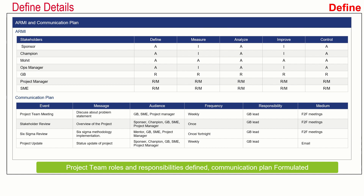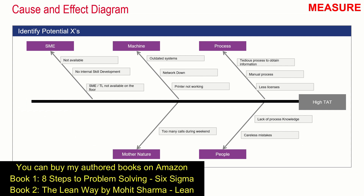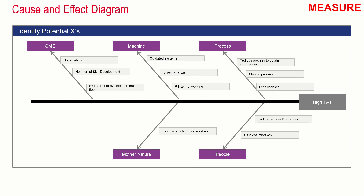The team then got into a room for a brainstorming session to create a fishbone diagram. The head of the fish represents the problem — the effect — which is high turnaround time. Causes identified include: under process — tedious process to obtain information, manual process, and fewer licenses on the floor. Under people — lack of process knowledge and careless mistakes. Under mother nature — too many calls during weekends. Under machine — outdated systems, network down, printer not working. Under SME — SMEs not available, no internal skill development program, and TLs or SMEs not available on the floor.